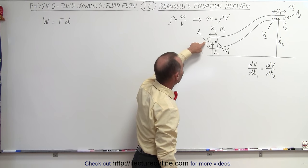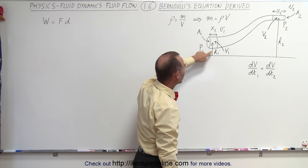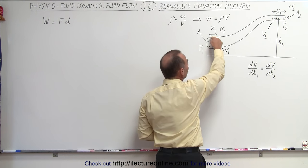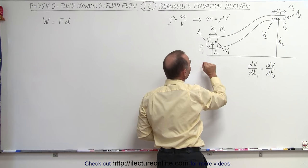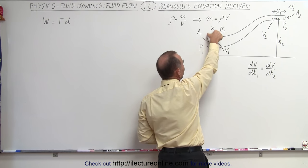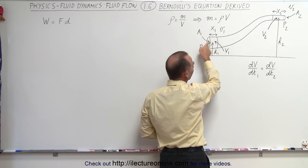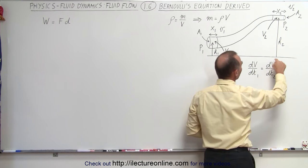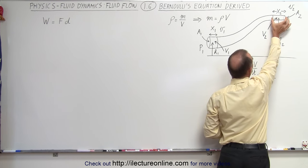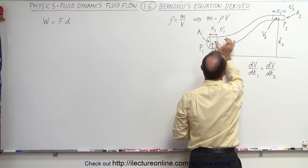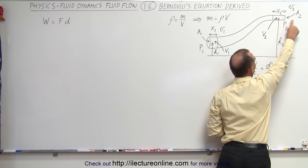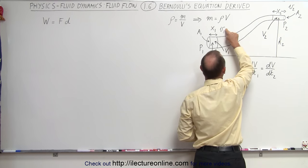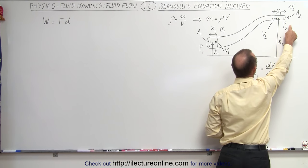We have the cross-sectional area at point 1, the pressure at point 1, and the height relative to some standard position H1. The volume of that element equals the cross-sectional area times the distance X1, and the fluid flows at velocity V1. On the other side, we have height H2, volume 2, and since it has a smaller cross-sectional area, X2 will be larger. Velocity 2 will be larger than velocity 1, and pressure 2 is on that side.